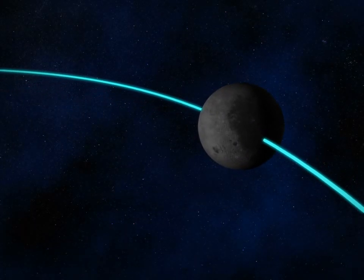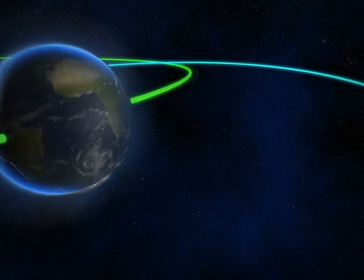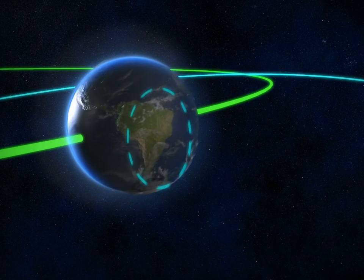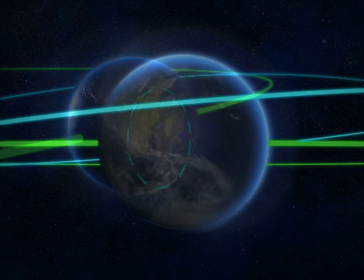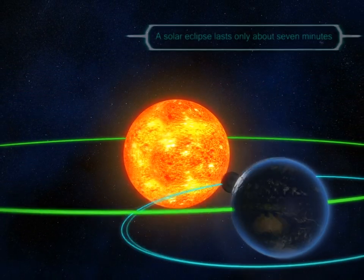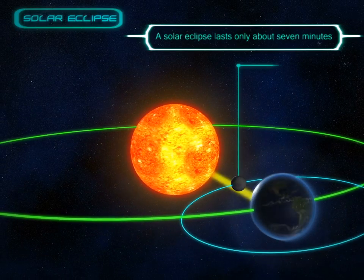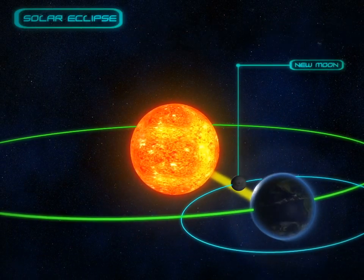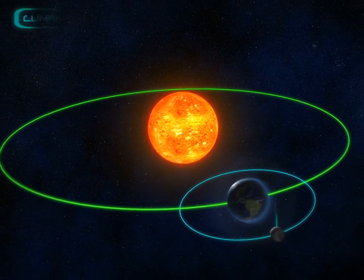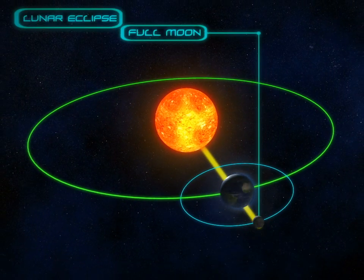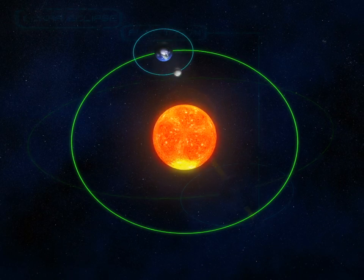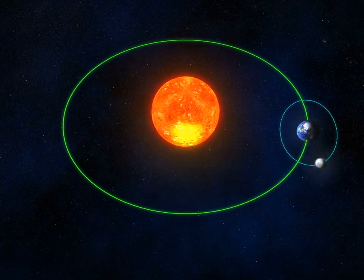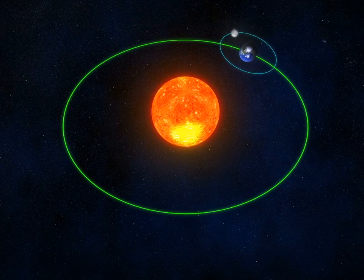Unlike a solar eclipse, a lunar eclipse can be viewed from nearly an entire hemisphere of the earth. And while a solar eclipse lasts only about seven minutes, a lunar eclipse can last up to half an hour or more. It is possible for the earth to view four to seven eclipses in a year.